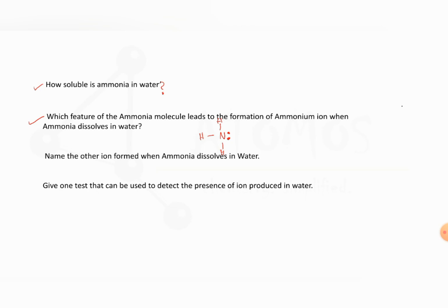Read the next question: Name the other ion formed when ammonia dissolves in water. Which is the other ion along with ammonium ion? That is OH- ion or hydroxyl ion.